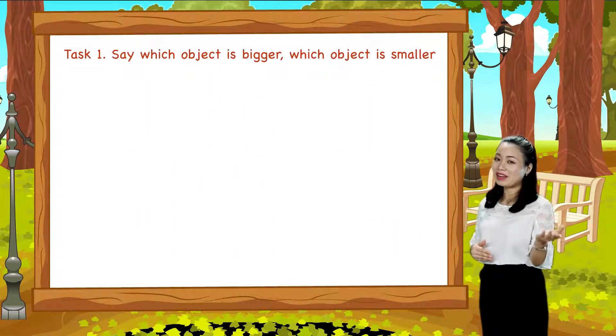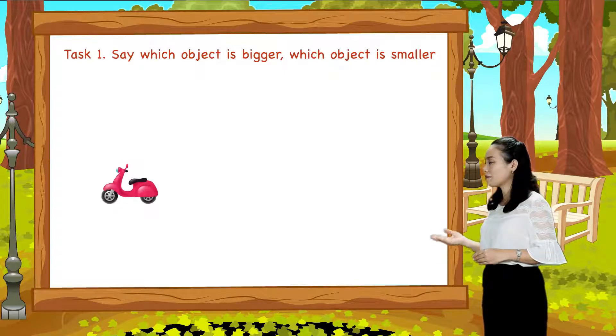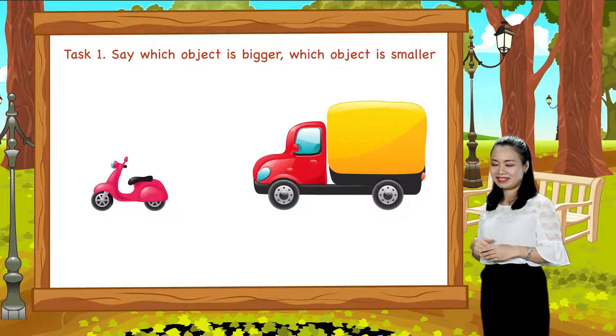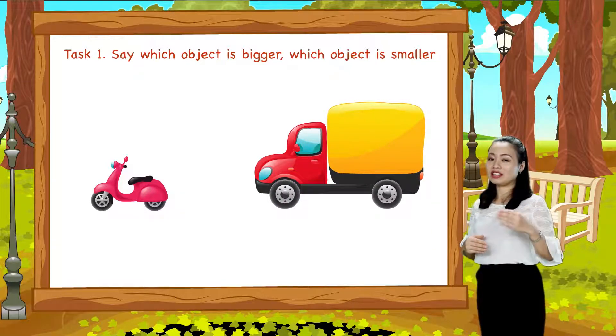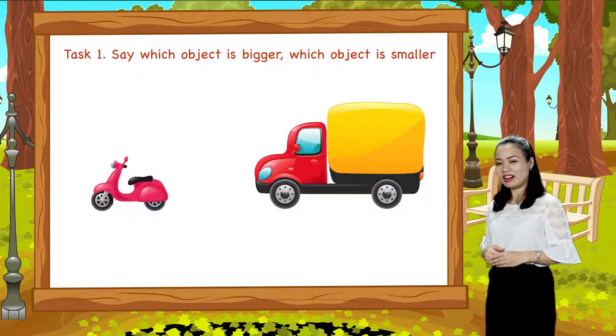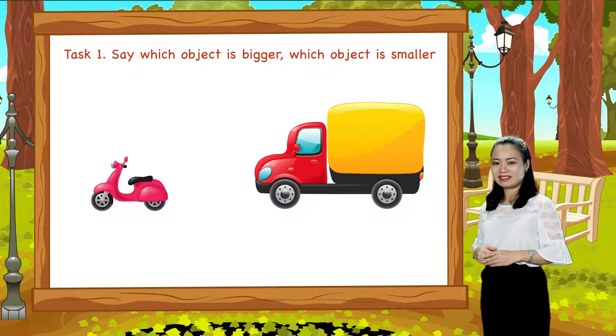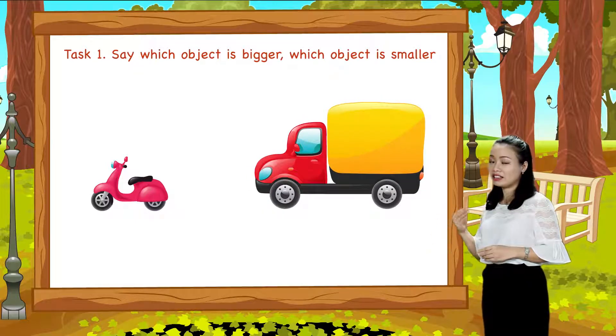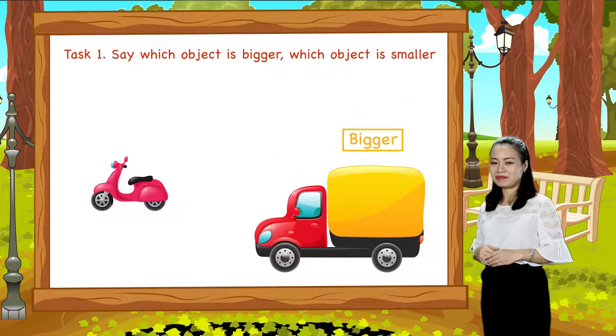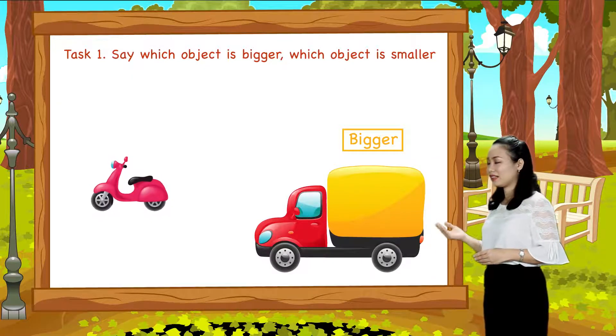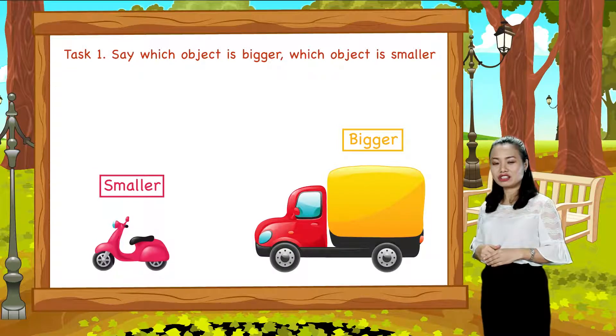Next we have a motorbike and a truck. Which one is bigger? Which one is smaller? So the truck is bigger than the motorbike or the motorbike is smaller than the truck.